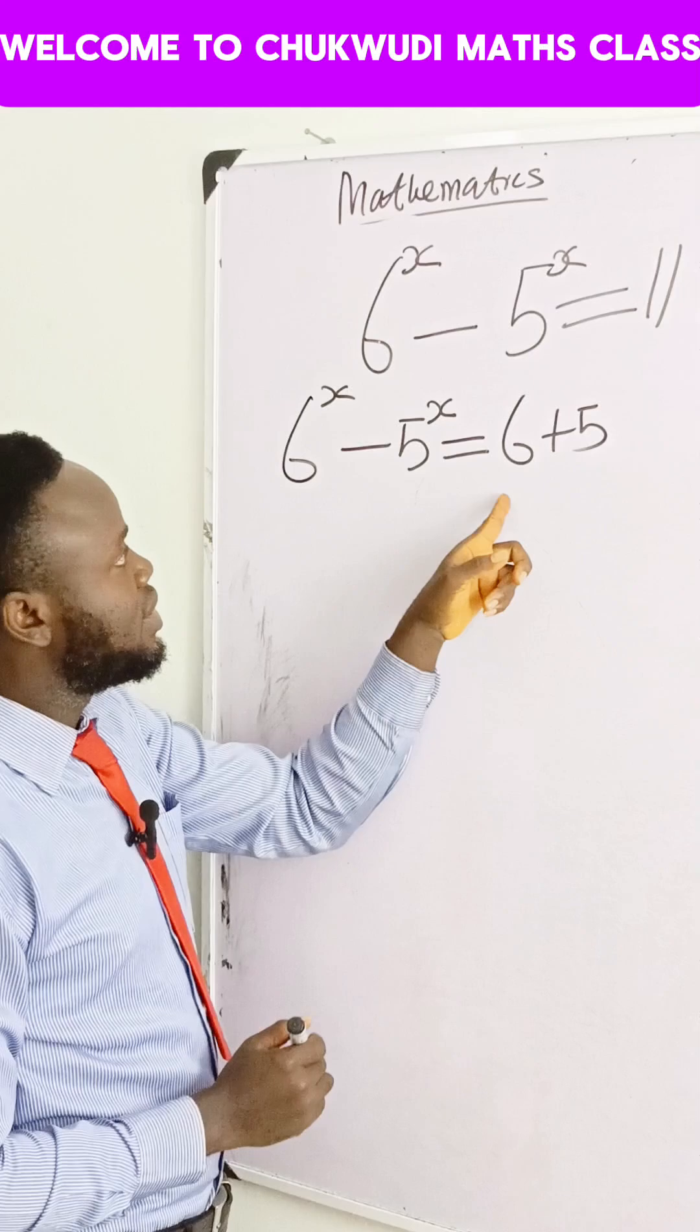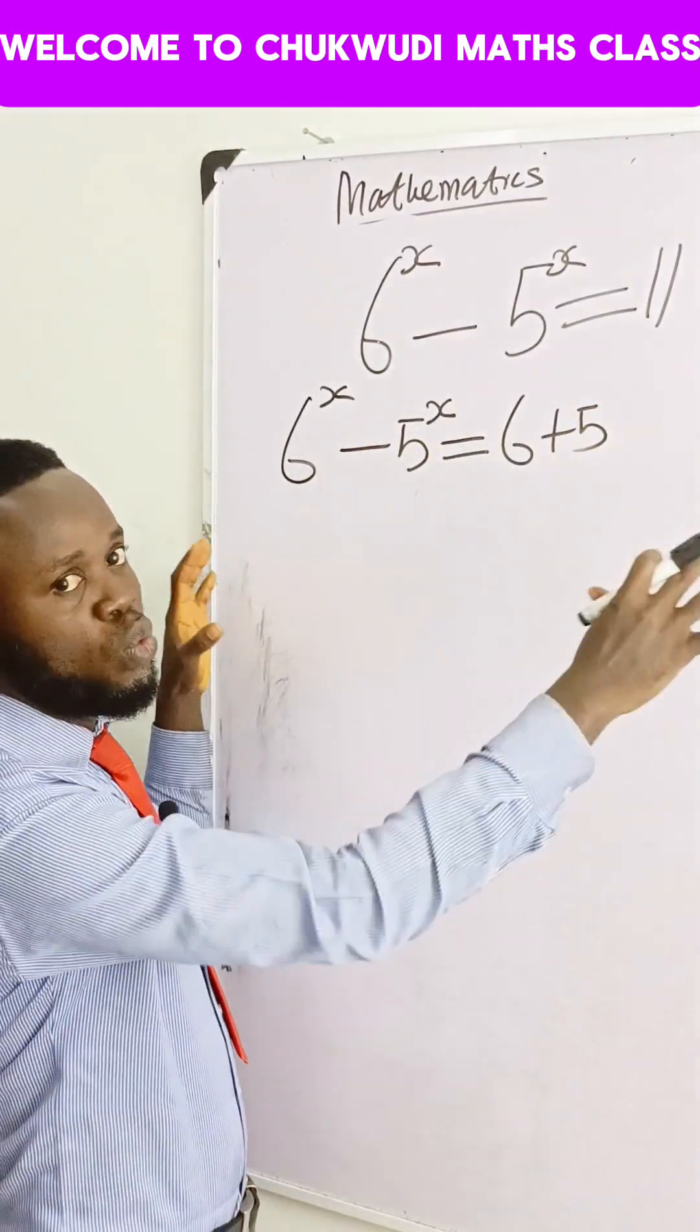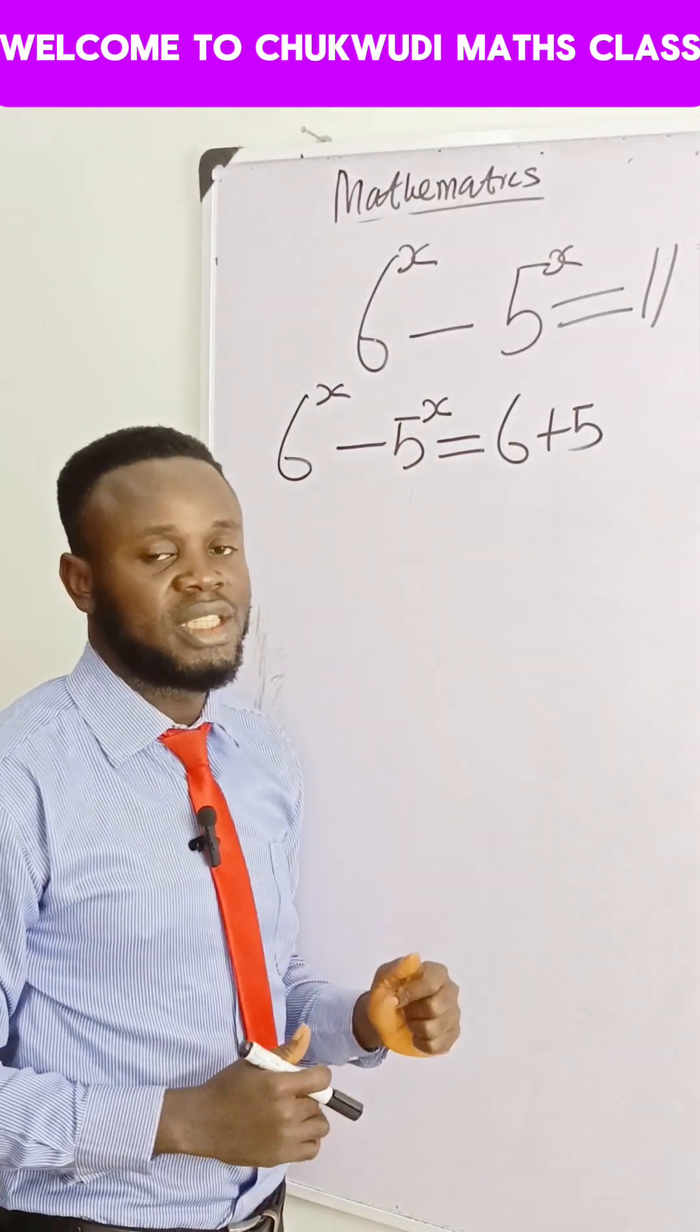Then if we can get 6 to the power something minus 5 to the power something, we can now equate and select the exponents to get the value of x that we are looking for.